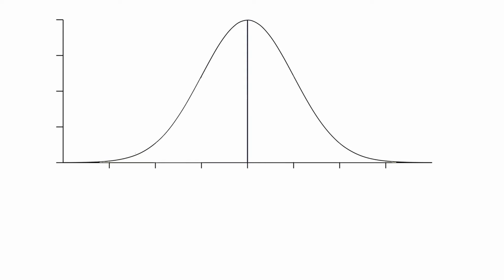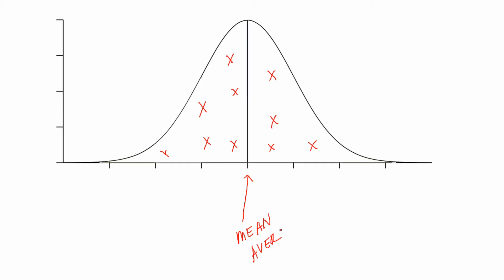Data tend to follow a normal distribution curve, also called a bell curve. A characteristic of a normal distribution curve is that it has a central tendency, or a mean, or an average. Most data tend to cluster near the mean or average. The standard deviation is the spread of data from the mean — think of it as how far the data values are from the average. The smaller the standard deviation, the closer the data is to the average. The bigger the standard deviation, the farther it is from the mean.